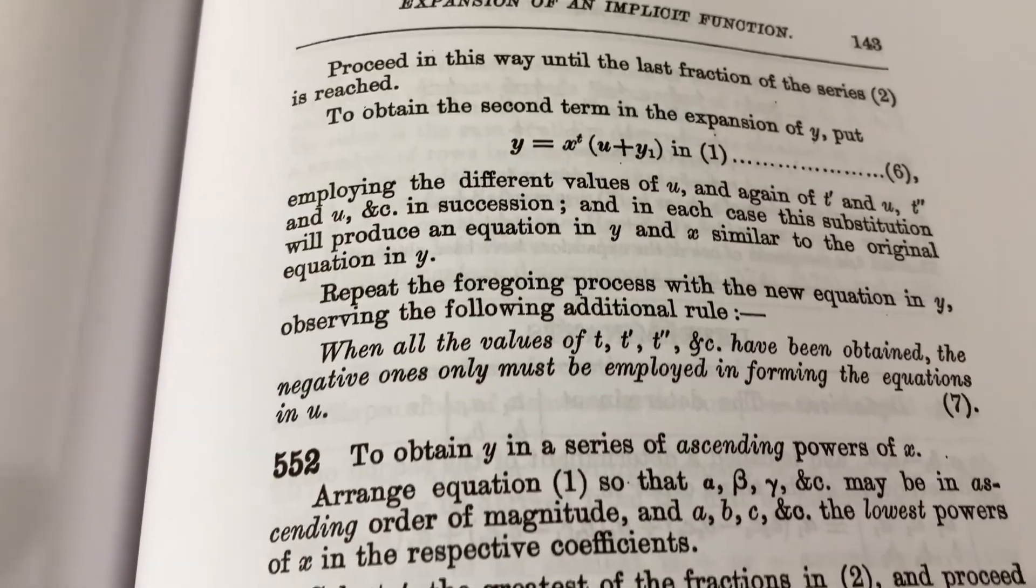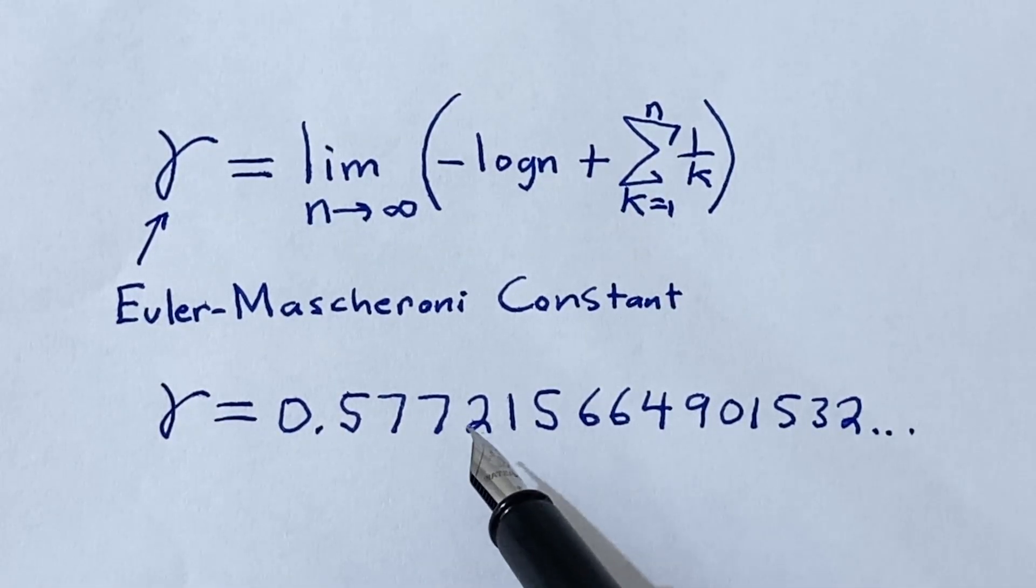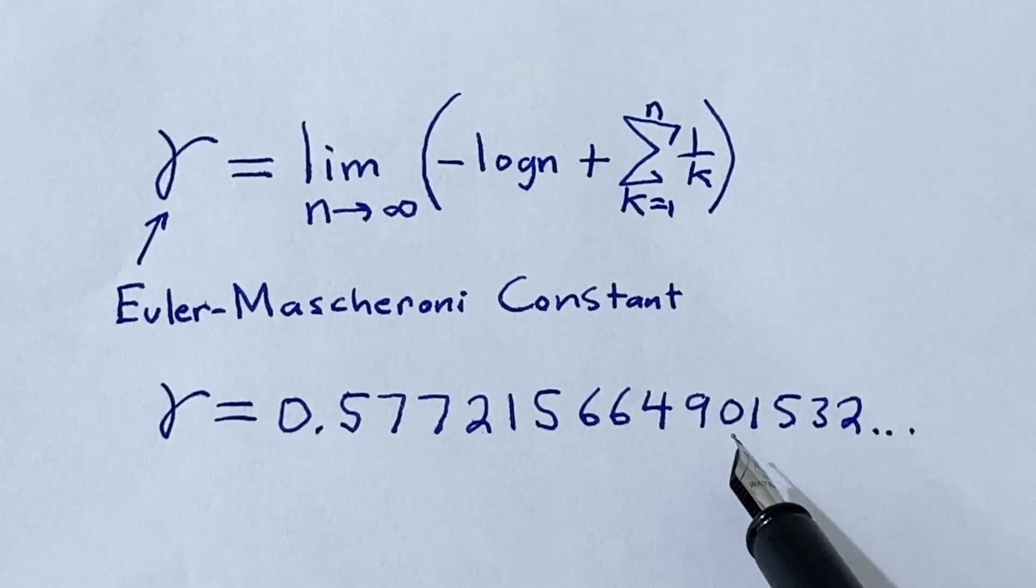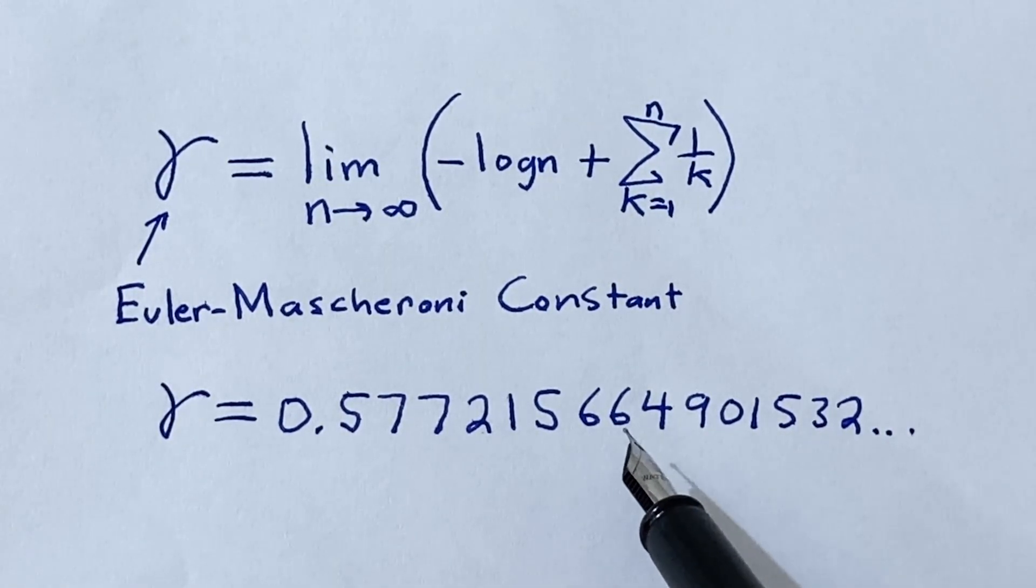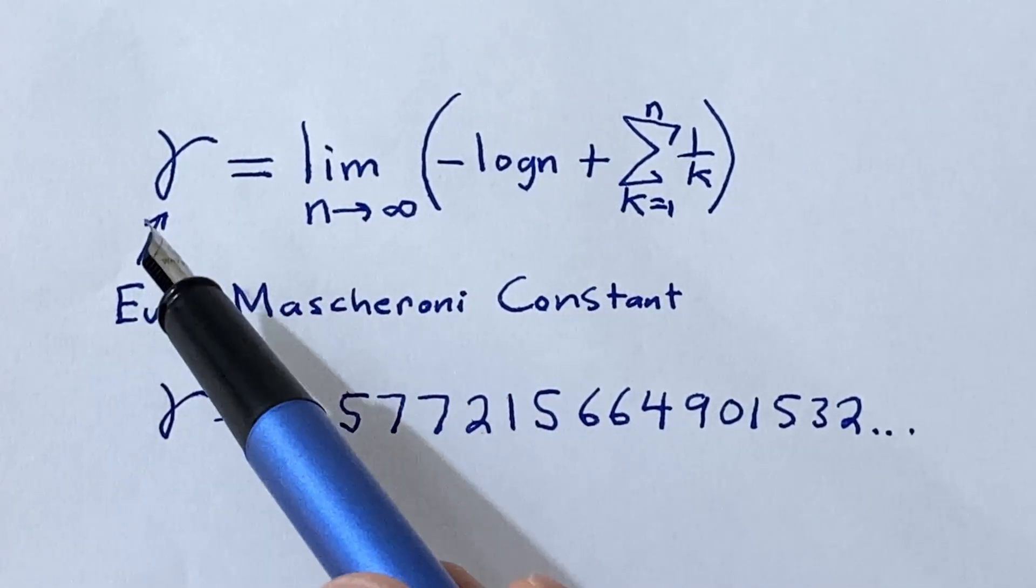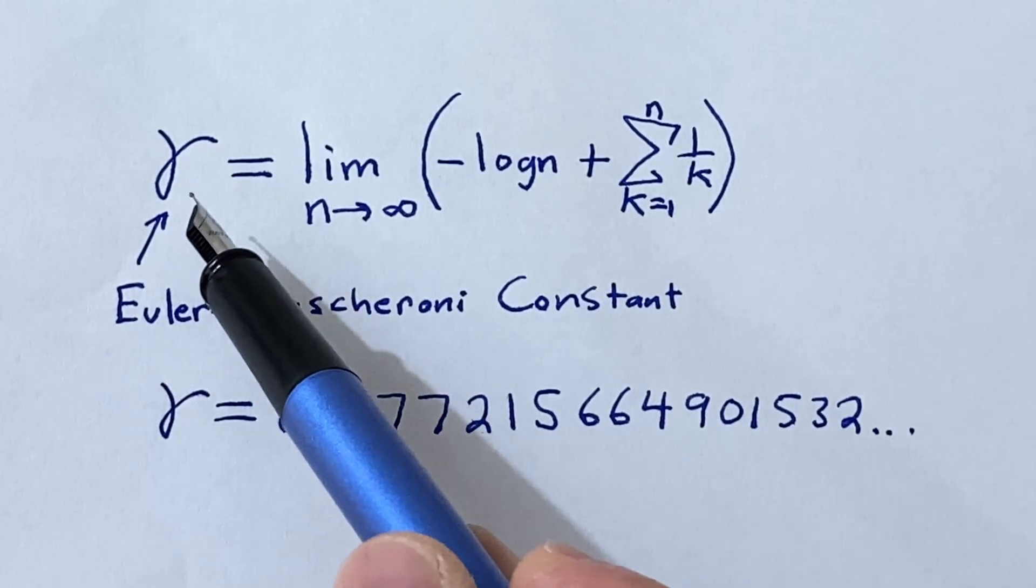He independently developed and investigated the Bernoulli numbers. He also approximated Euler's constant up to 15 decimal places. Note that Euler himself did this in 1735. Also note that it is an unsolved problem in mathematics to determine if Euler's constant is actually irrational.